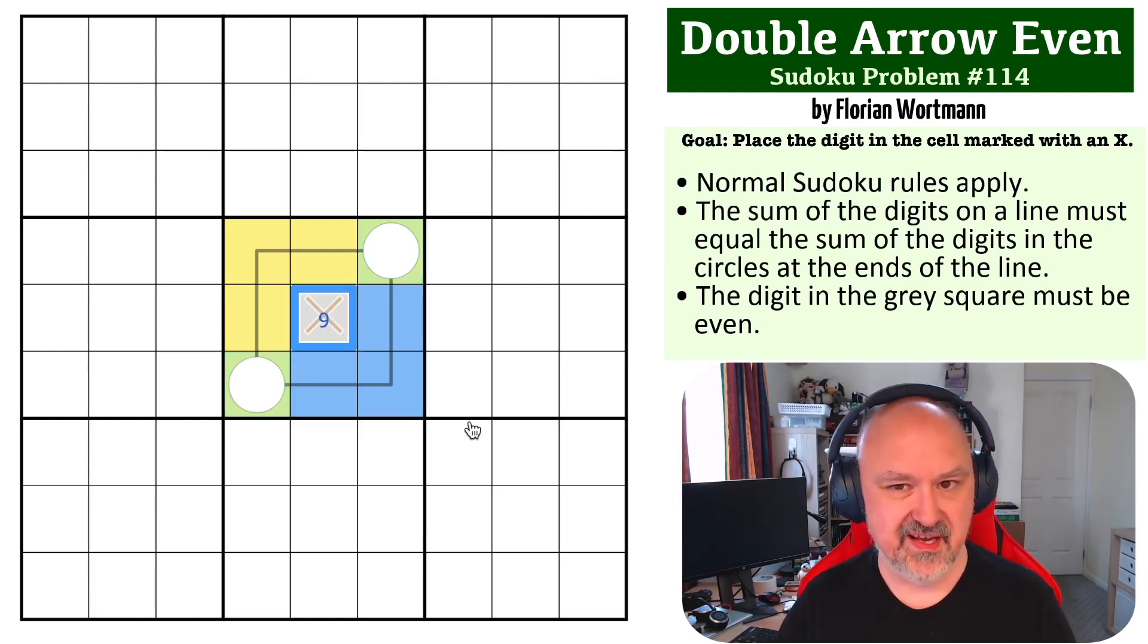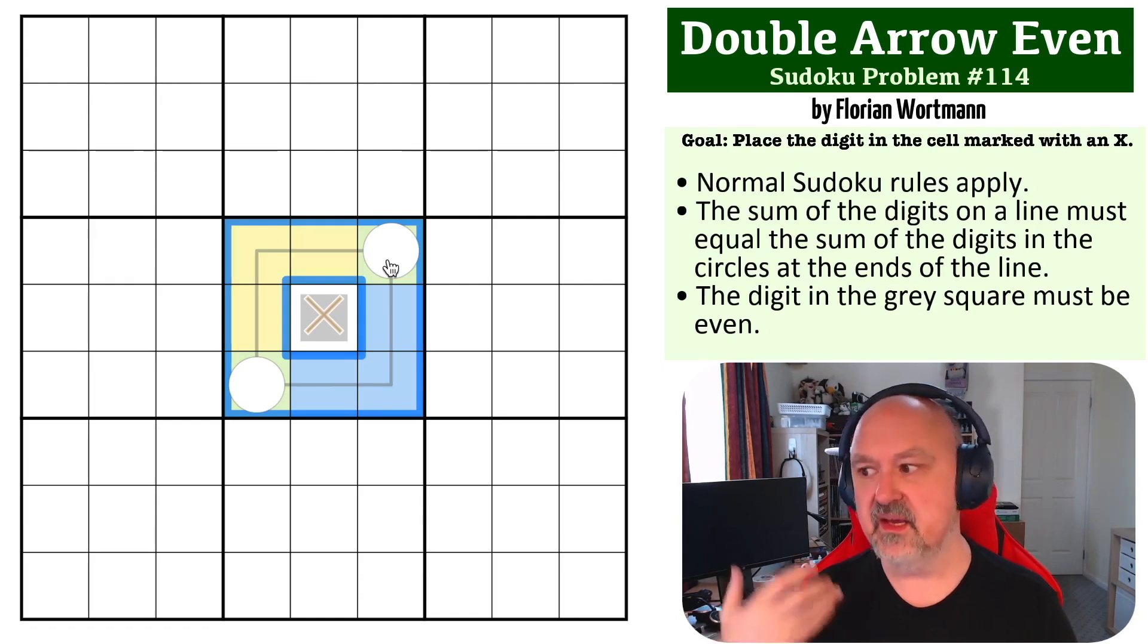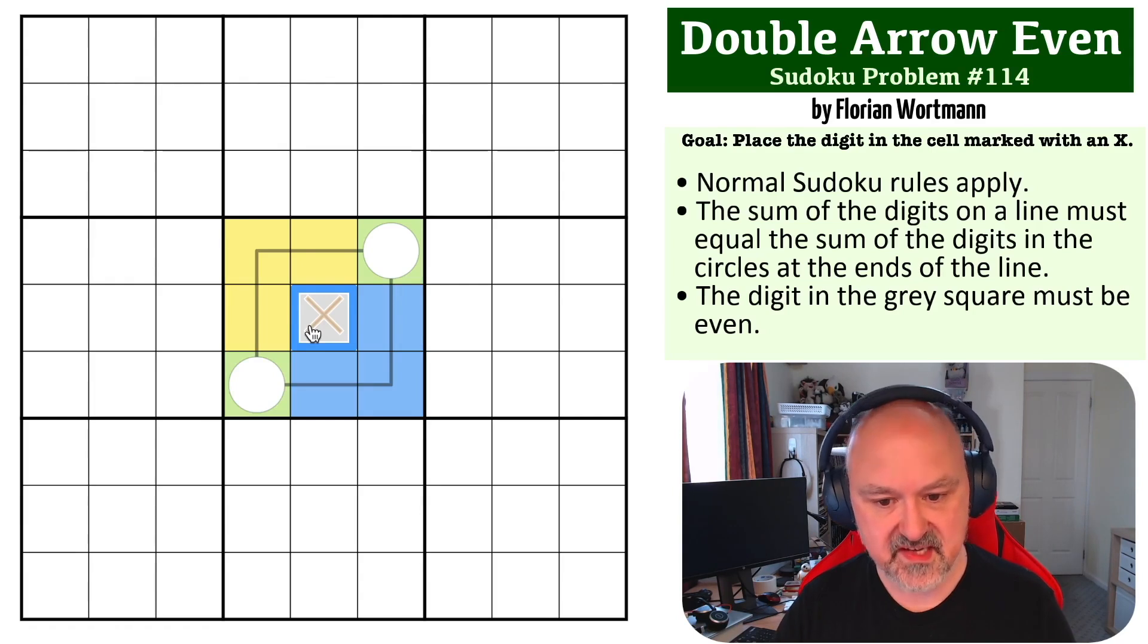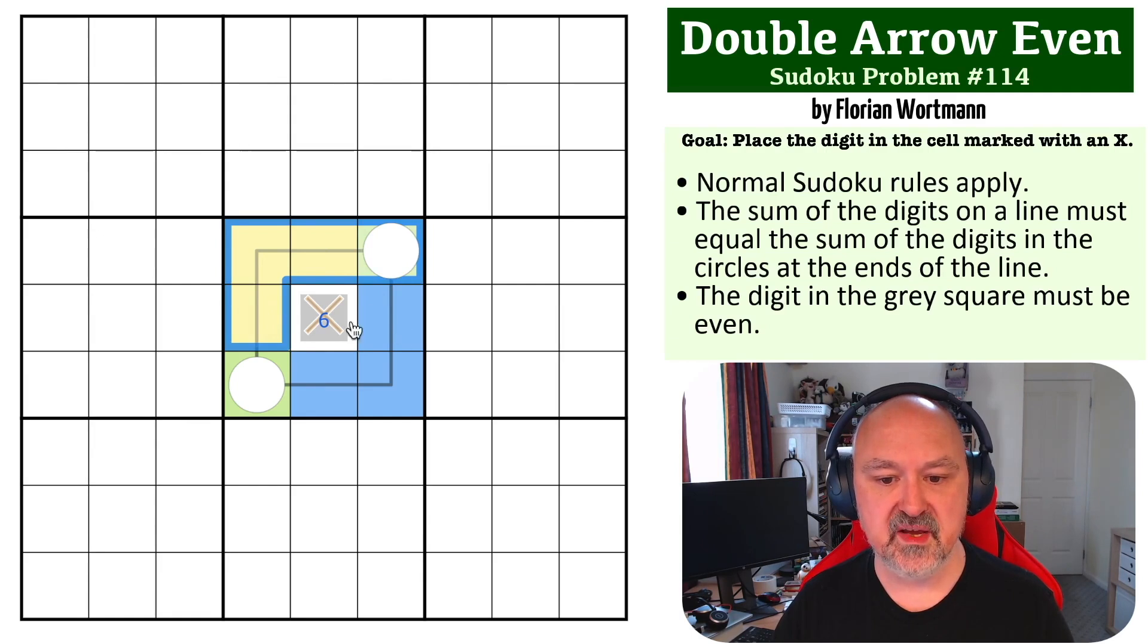If these were 13, then 13 by 3 is 39, and the central digit would have to sum to a 6, and that's a possibility. If these were 14, then 14 times 3 is 42, which means that to get 45 minus 42, this has to be a 3, which is not even—that's not going to work.